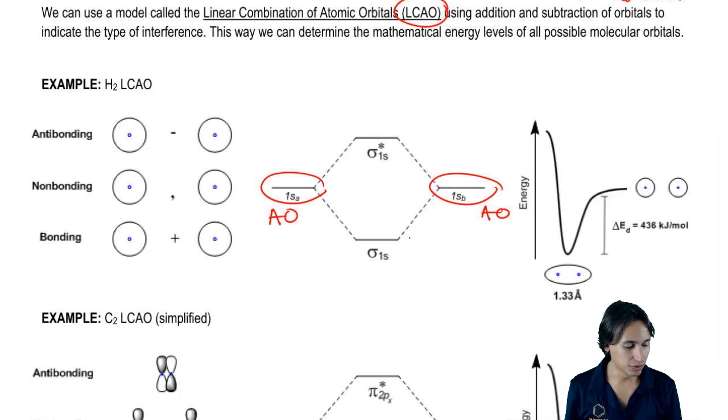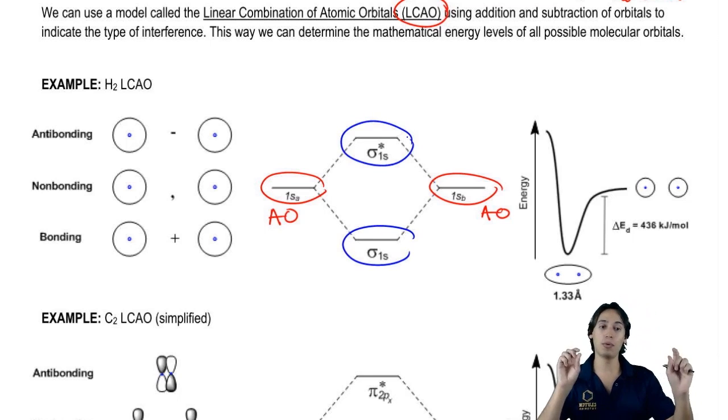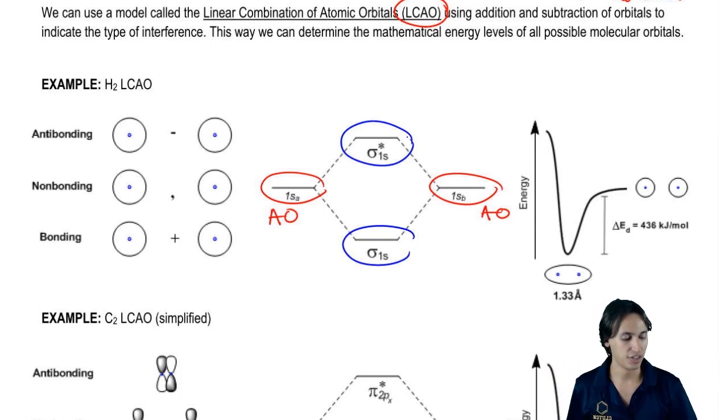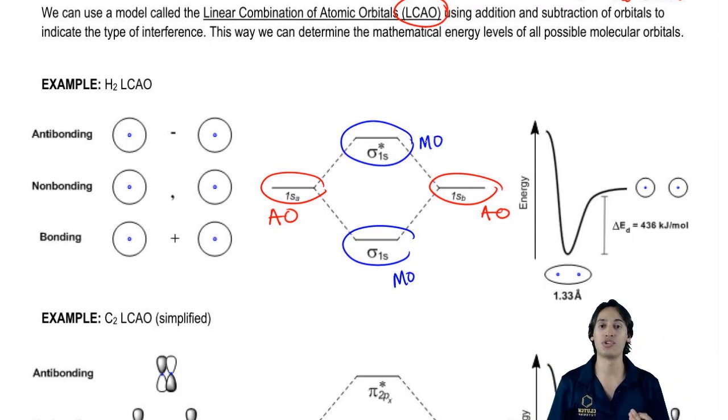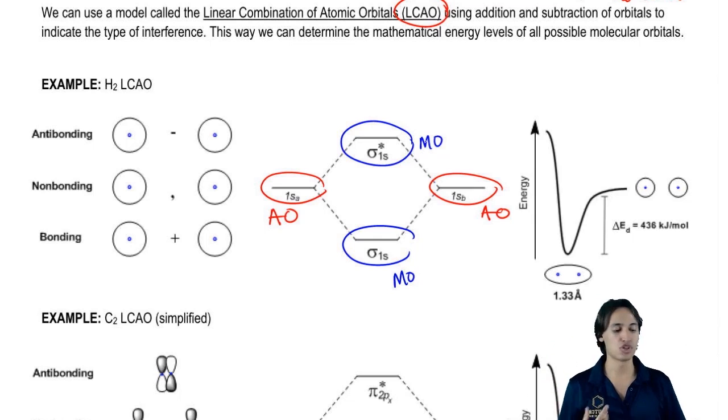Now these orbitals in the middle have to do with interference, how the atomic orbitals are coming together. These are called molecular orbitals. Molecular orbitals predict where electrons are going to be in the entire molecule, not just for the atom. Basically they predict the way the bond is going to behave.